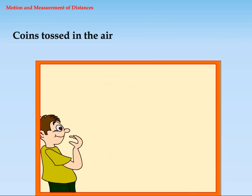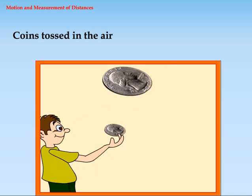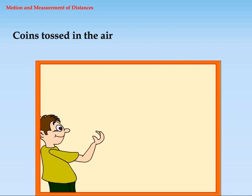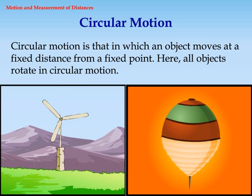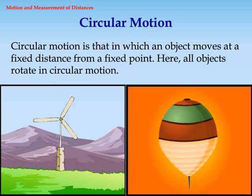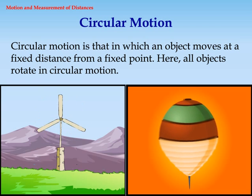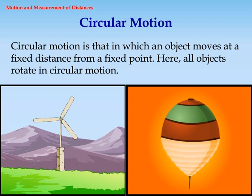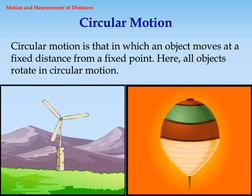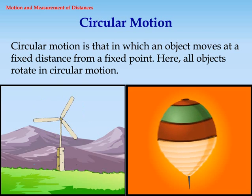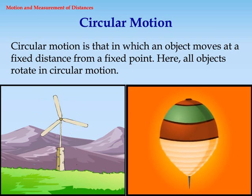Coins tossed in the air. Number 2: Circular motion. Circular motion is that in which an object moves at a fixed distance from a fixed point. All objects rotate in circular motion.